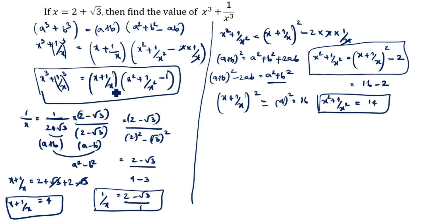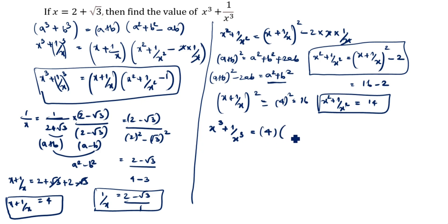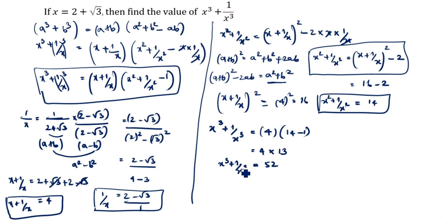Now we have x plus 1 by x equals 4 and x square plus 1 by x square equals 14. Substituting into the formula: x cube plus 1 by x cube equals 4 times open bracket 14 minus 1, which is 13. So 4 into 13 equals 52. Therefore x cube plus 1 by x cube equals 52.